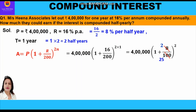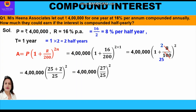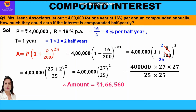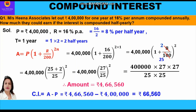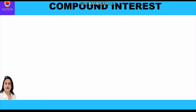Taking LCM, we write: 4 lakh × (25 + 2)/25 whole squared = 4 lakh × (27/25)² = 4 lakh × (27 × 27)/(25 × 25). Simplifying, the amount comes to rupees 4,66,560. Compound interest is amount minus principal: 4,66,560 − 4,00,000 = rupees 66,560. This is the compound interest when interest was compounded half-yearly.